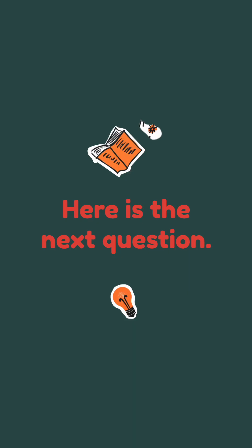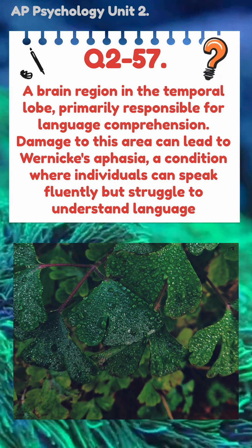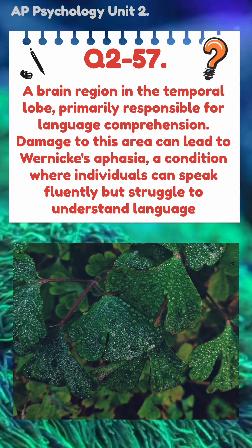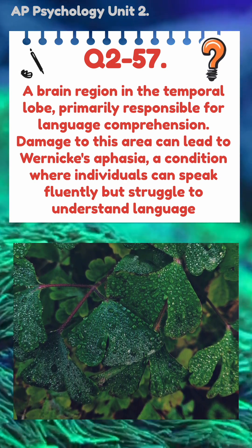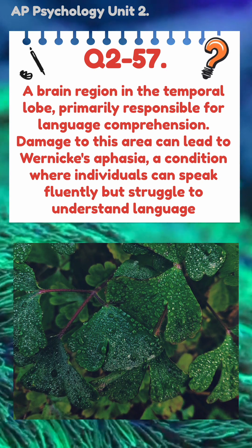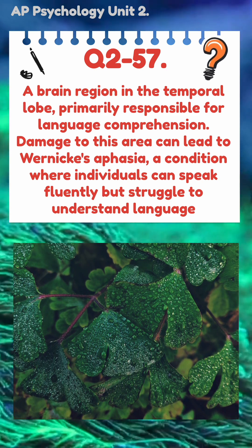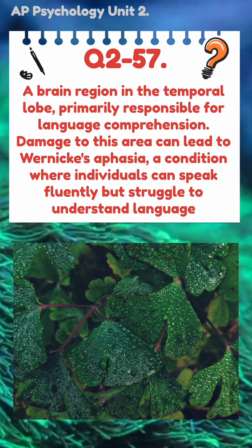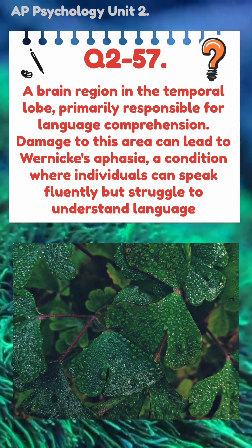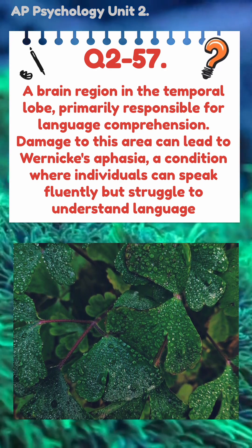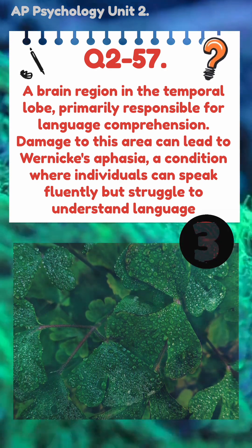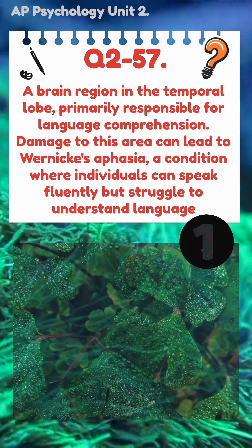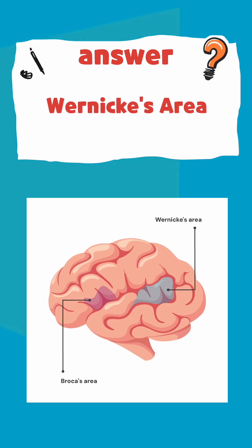Here's the next question. A brain region in the temporal lobe, primarily responsible for language comprehension. Damage to this area can lead to Wernicke's aphasia, a condition where individuals can speak fluently but struggle to understand language. The answer is Wernicke's area.